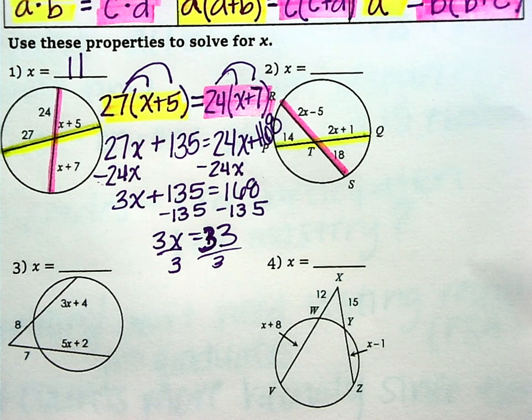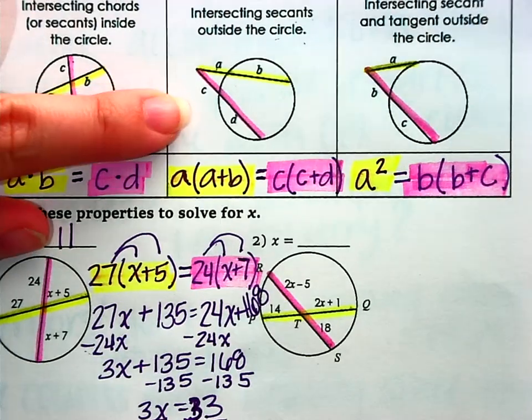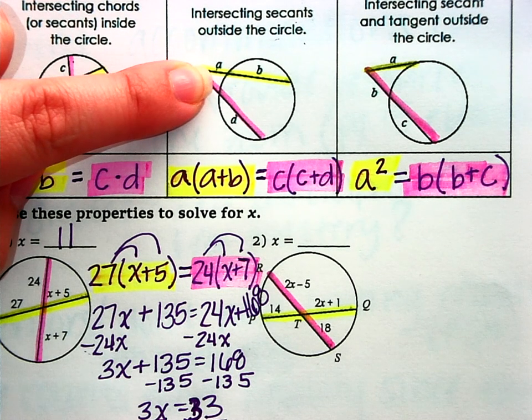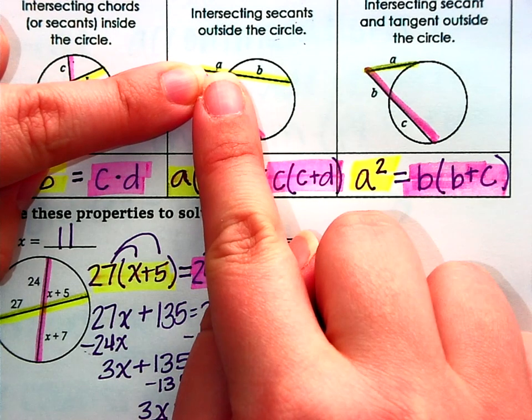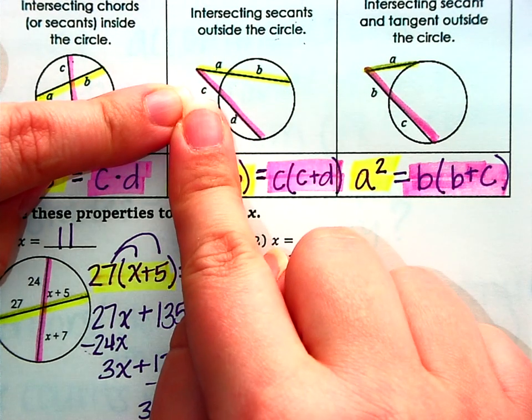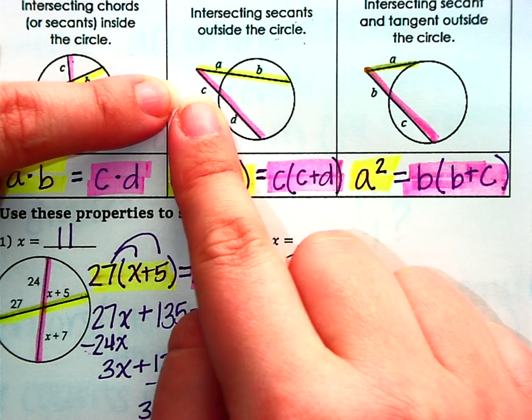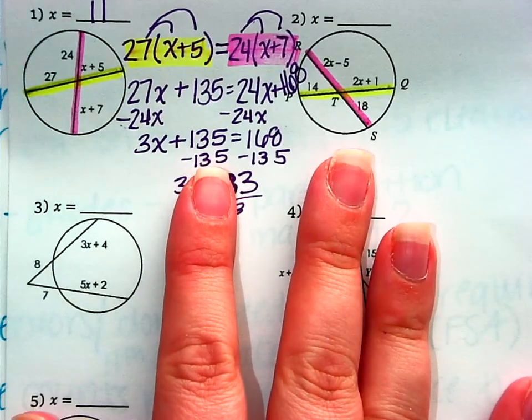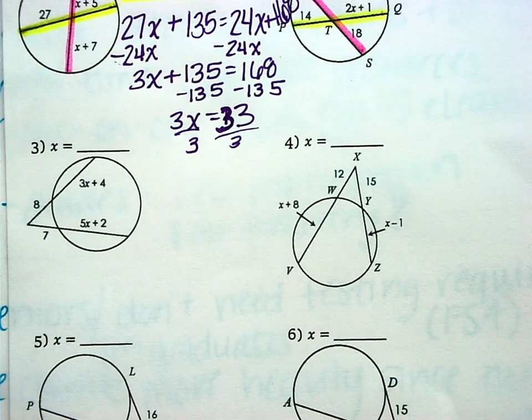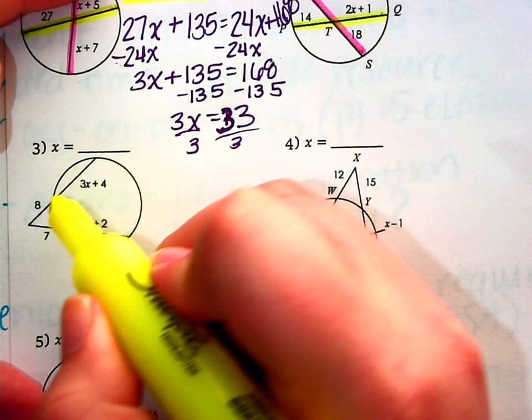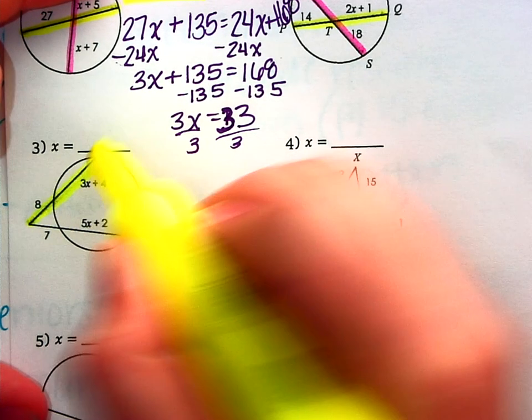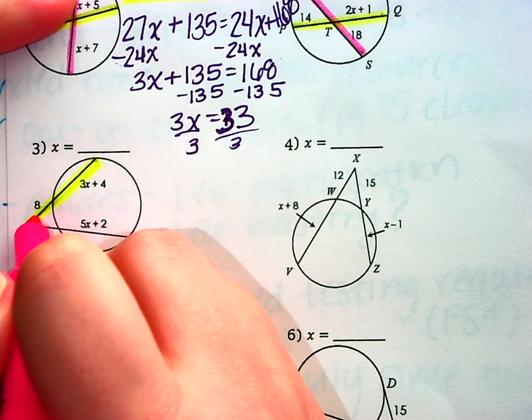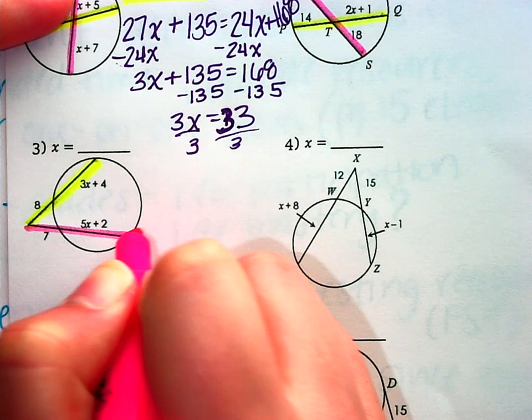Alright, number 3 is 2 secants. So we're going to follow the setup right here in the middle. Same for number 3 and number 4. We're going to take the piece on the outside, multiply it by the two segments added together, and then do that for the other secant as well. Okay, so we have 8 and 3x plus 4, 7 and 5x plus 2.